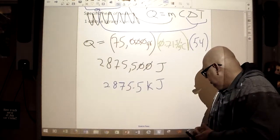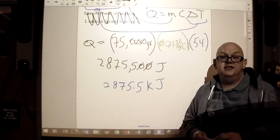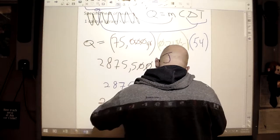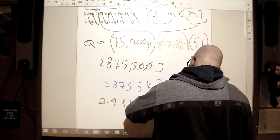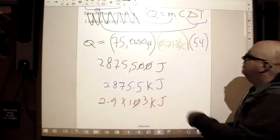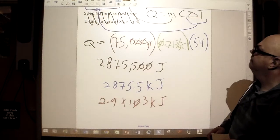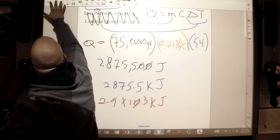That's a large number. Is there another way to express it? We can also divide by 1,000 to convert this to kilojoules. So that's going to give us 2,875.5 kilojoules. That is the same, but what if we were going to use scientific notation? Well, then it's going to be 2.9 times 10 to the third kilojoules. So that's our first problem that we have solved here. All right, let's go on with the next one.